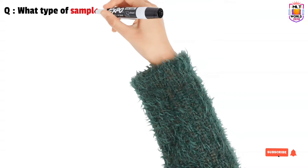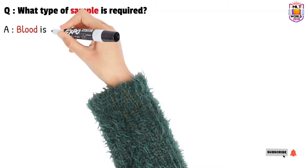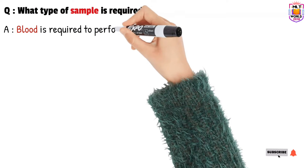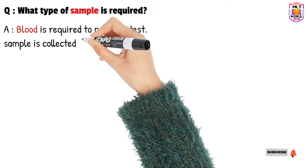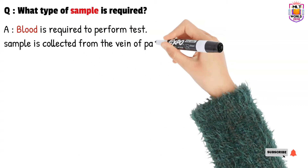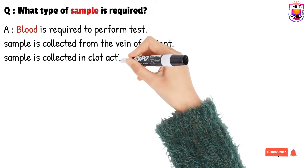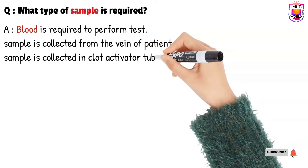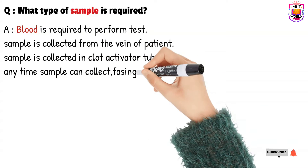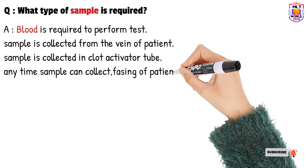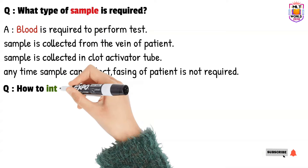What type of sample is required? To perform a CRP test, we require blood, which is taken from a vein. The sample is collected in a vacutainer tube — a red or yellow cap tube. The sample can be collected at any time; fasting is not required.